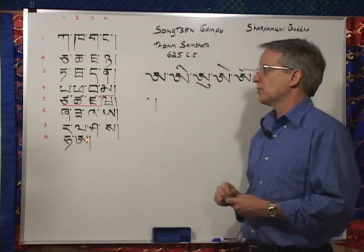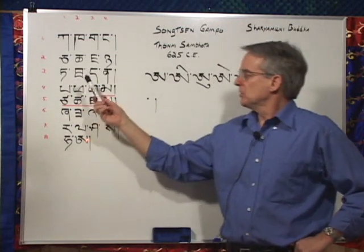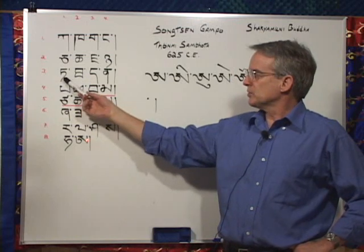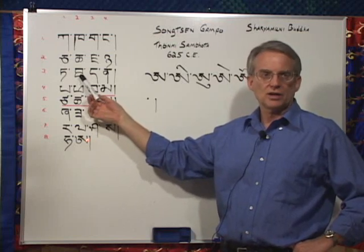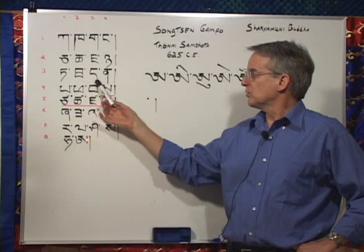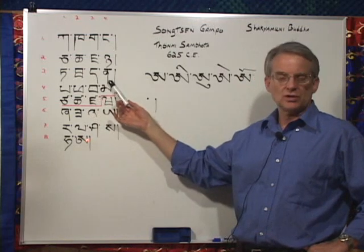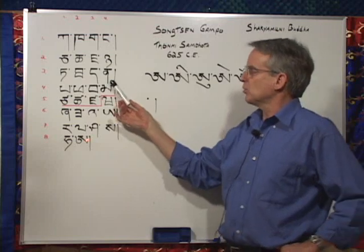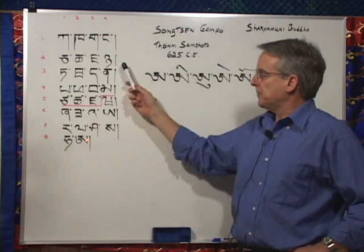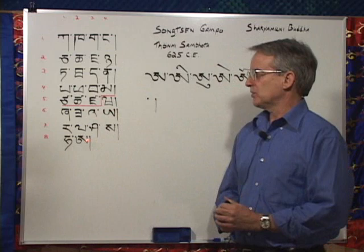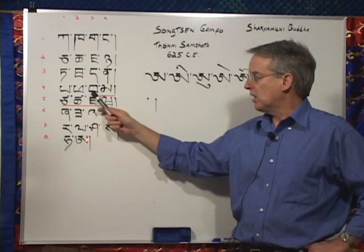The fourth letter in the second row is like the Spanish nya in mañana. The third row, the sounds are all made at the teeth, with the tip of the tongue at the back of the teeth. So the first one is short and high: ta. The second one is medium in length, breathy and high: ta. The third is long and low: da. The fourth one is long and low and nasal: na. The fourth row, the sounds are all made at the lips: pa, pa, ba, ma.